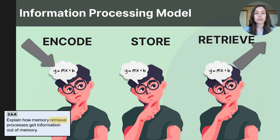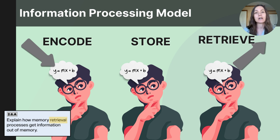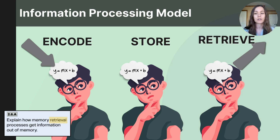As you already know, the information processing model of memory uses the terms encode, store, and retrieve as steps to explain how the mind takes in, holds, and picks up information. Today's video is going to focus on that final step of retrieval. Memory retrieval is the process of accessing information in our mind that's been stored and then bringing it into our conscious awareness.